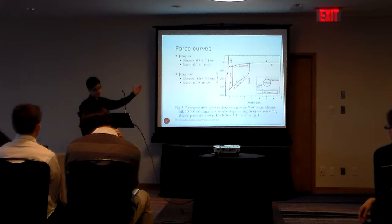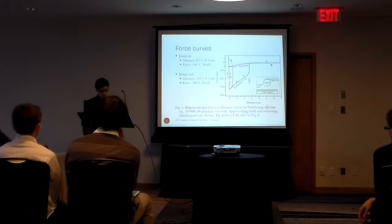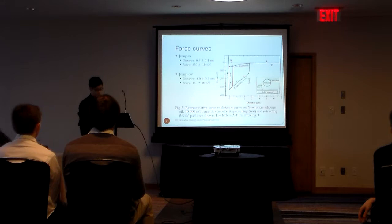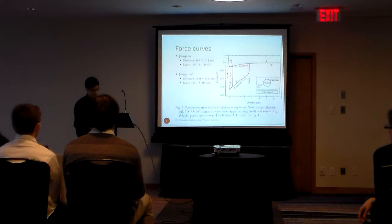This force curve gives us values for the jump-in and jump-out distance and force. Looking at the retract curve in black, the jump-out distance is much larger than on approach, because the meniscus formed on retraction as the particle moves away from the solid support is larger. That corner on the black curve represents the exact moment when the film detached from the particle.